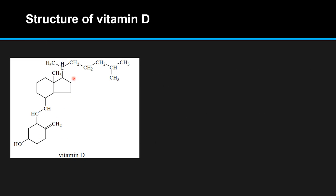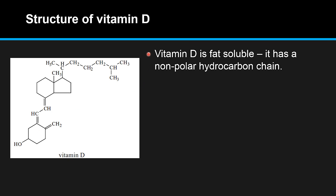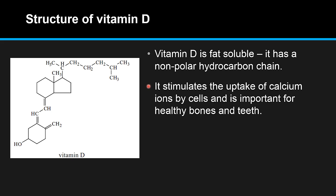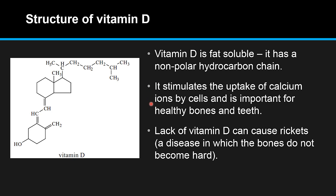Here is the structure of vitamin D. It has a non-polar hydrocarbon chain and non-polar hydrocarbon rings, making it fat soluble. Vitamin D stimulates the uptake of calcium ions by cells and is important for healthy bones and teeth. A lack of vitamin D can cause rickets, which is a disease in which the bones do not become hard.